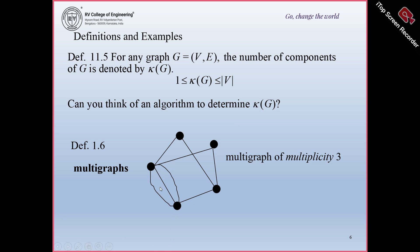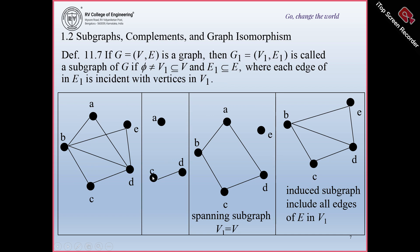Next is multigraphs — a graph in which between any two vertices there are more than one edge. For example, between two vertices there are three edges, so we call this a multigraph of multiplicity 3. For the other vertex pairs, the multiplicity is 1; only for that one pair it is 3.